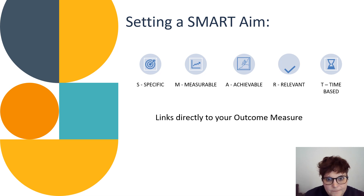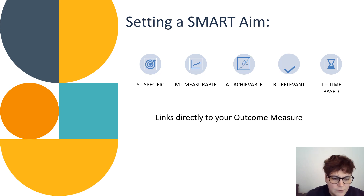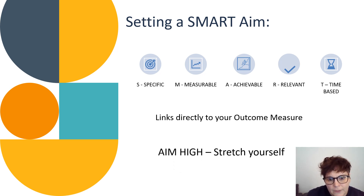The first part of the driver diagram is setting an aim. Make sure your aim is specific, measurable, achievable, relevant, and time-based — a SMART aim — and remember it links directly to your outcome measure. Make sure everybody's on the same page and that you think about it as a group. Remember to aim high and stretch yourself — don't aim for a small improvement, because any improvement within that aim is a good improvement, and you might find you can go that little bit further.